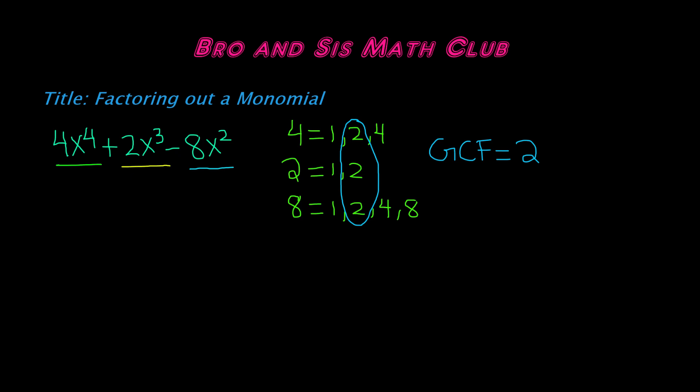Now we have to find the GCF of the variables. So our variables are x. So we have x to the 4th, x to the 3rd, and we have x squared.